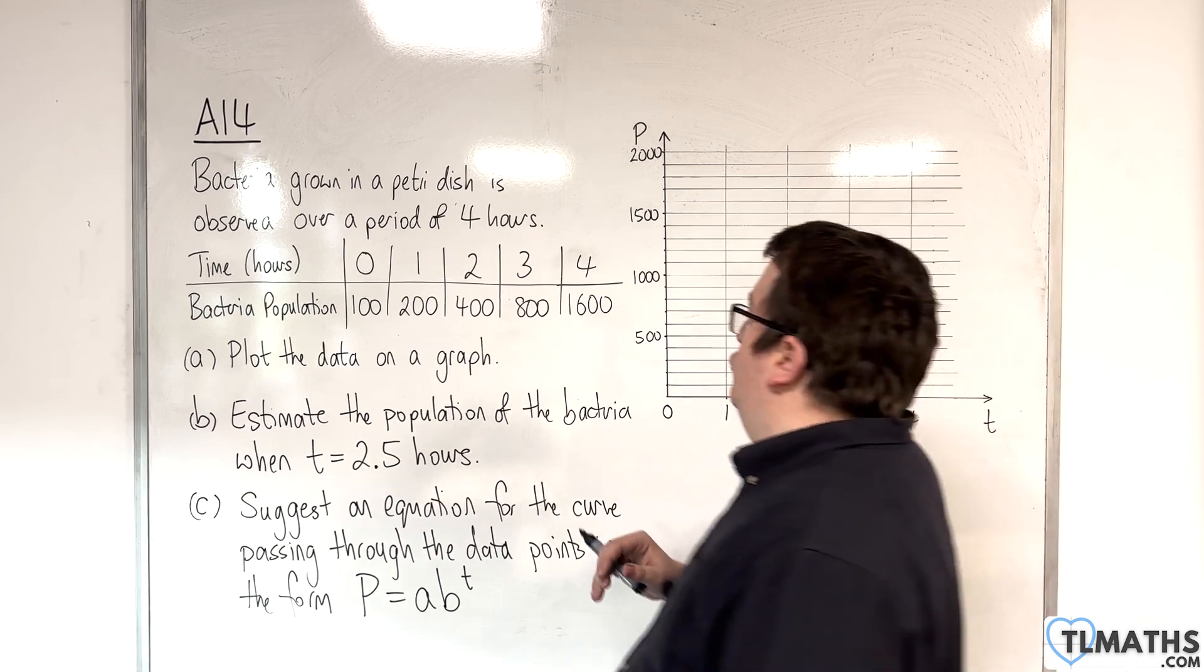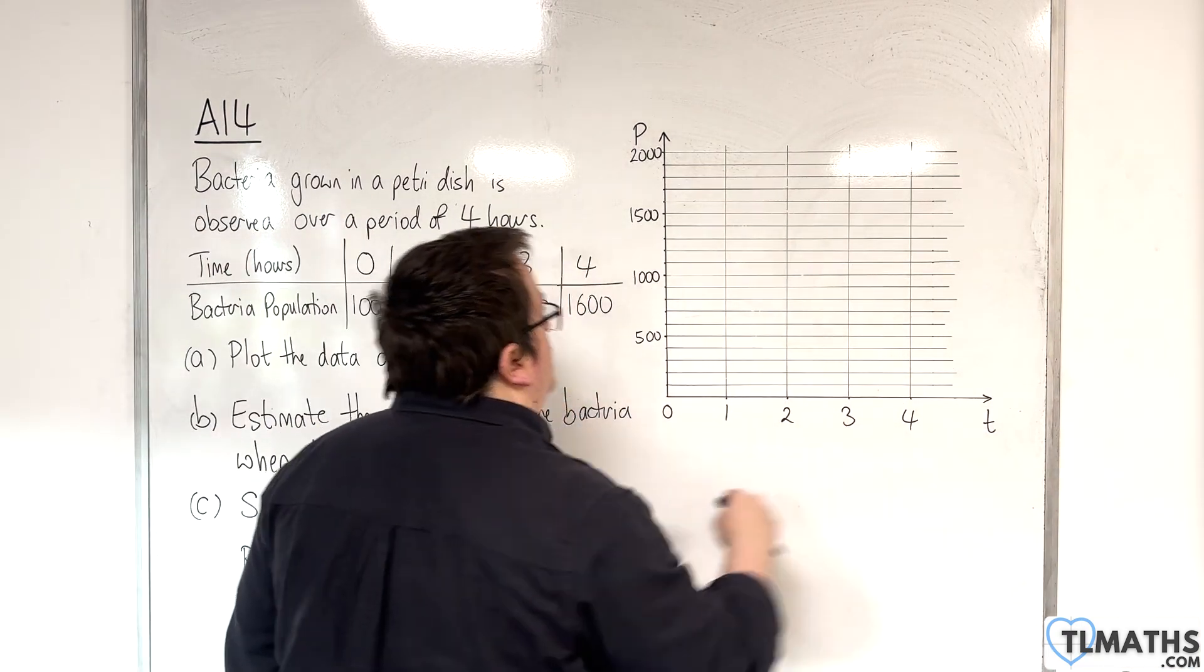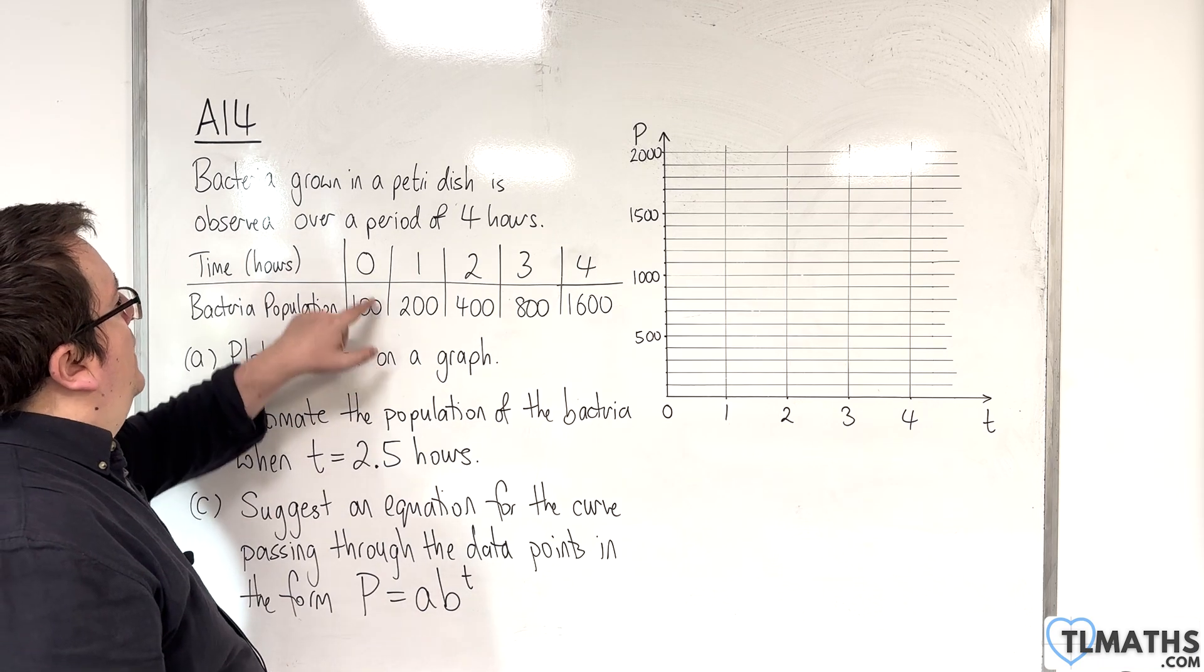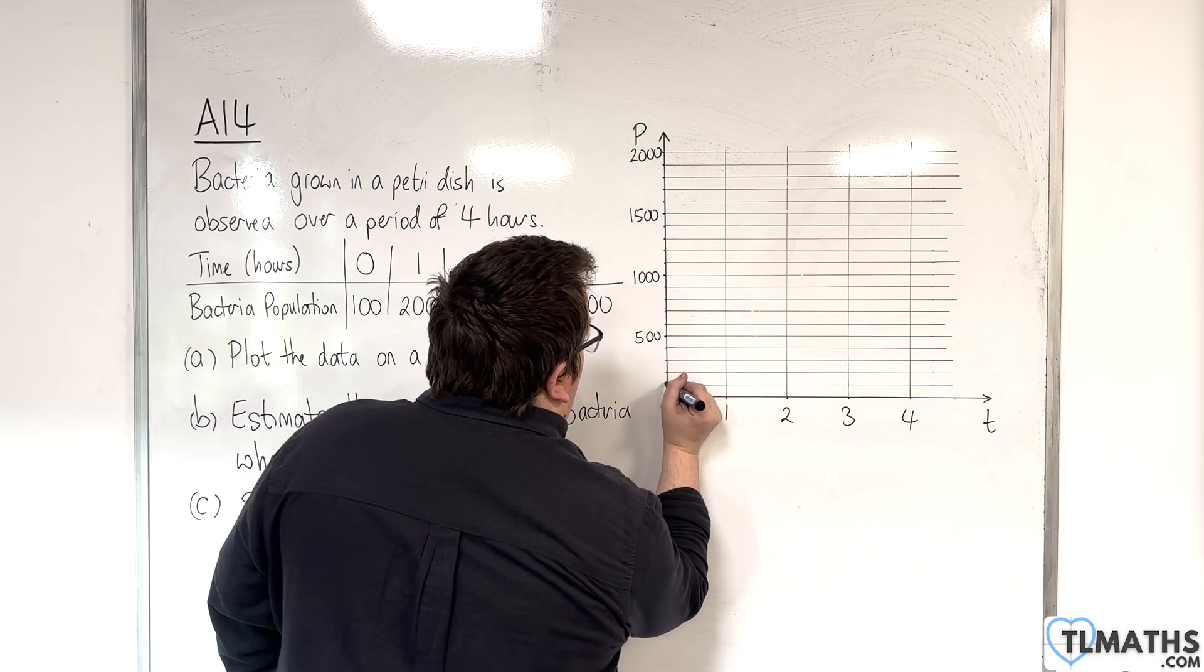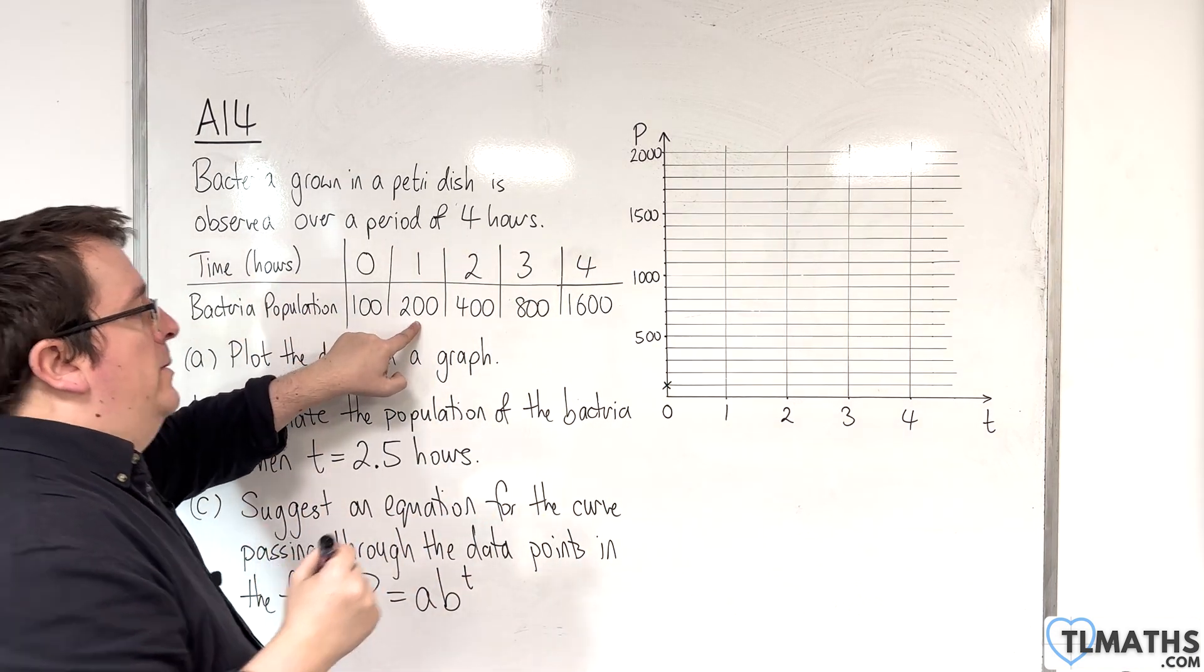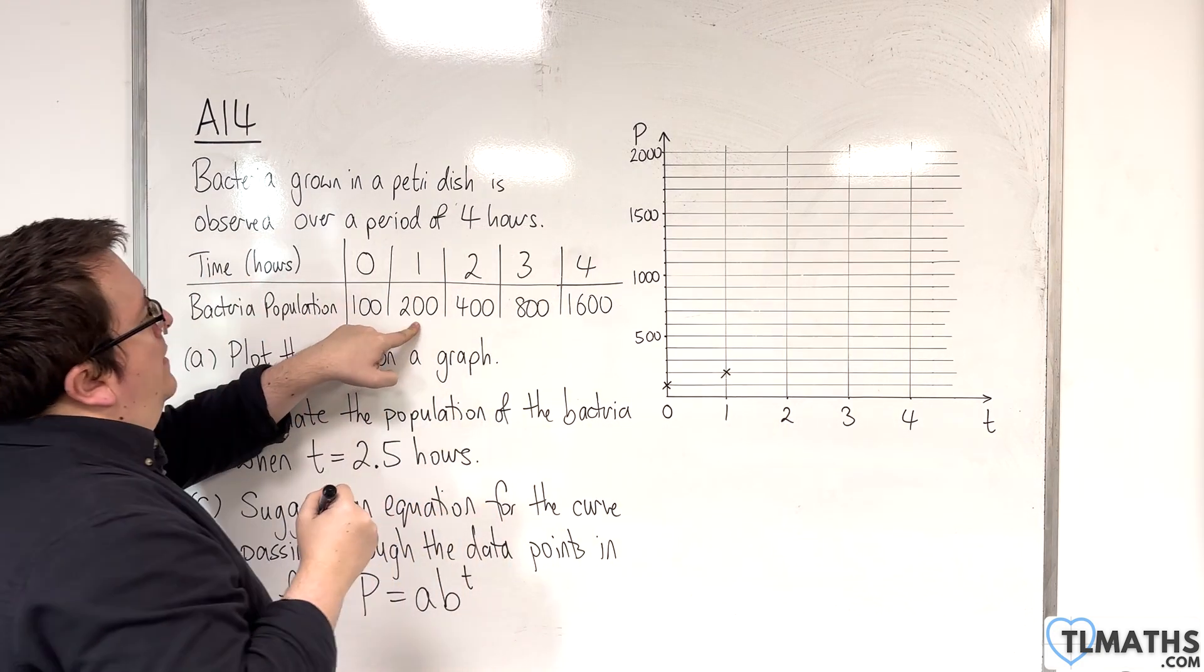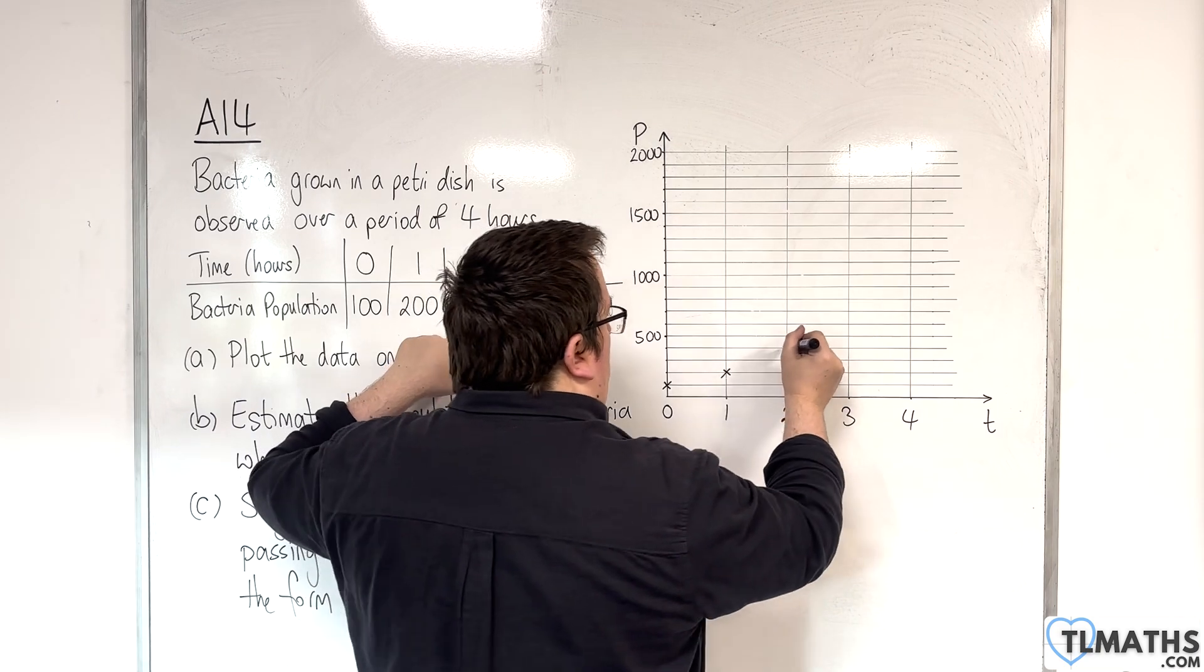Plot the data on a graph. Here are my axes. We have time on the horizontal, population on the vertical. We're going to start off with at time zero, we're at 100. So 100 would be here, and then after one hour we're at 200, so that would be there. Then after two hours, we'll be at 400, so that would be there.